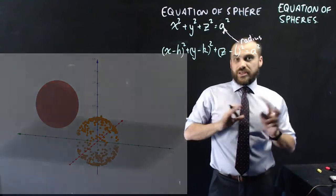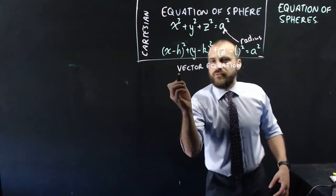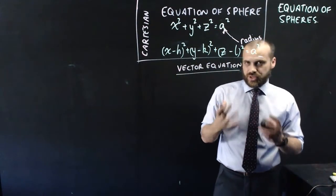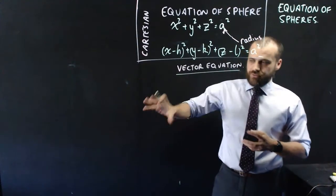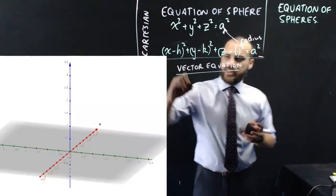So that's the Cartesian form of the equation of a sphere, but we can also look at the vector equation of a sphere. And I love this, I think it's really clever. So on our three-dimensional graph here, we can just put a dot at c, and so c is like our center.